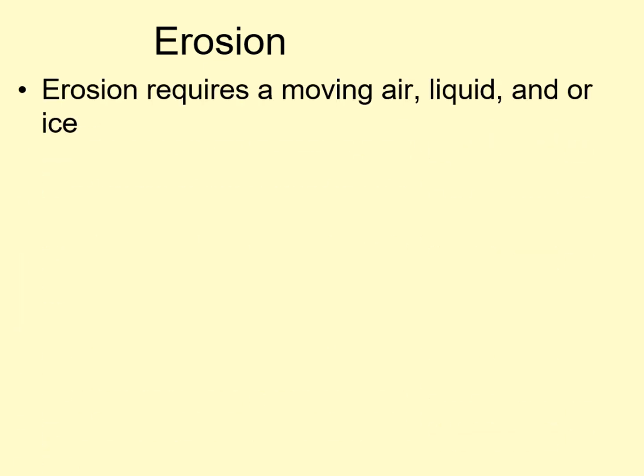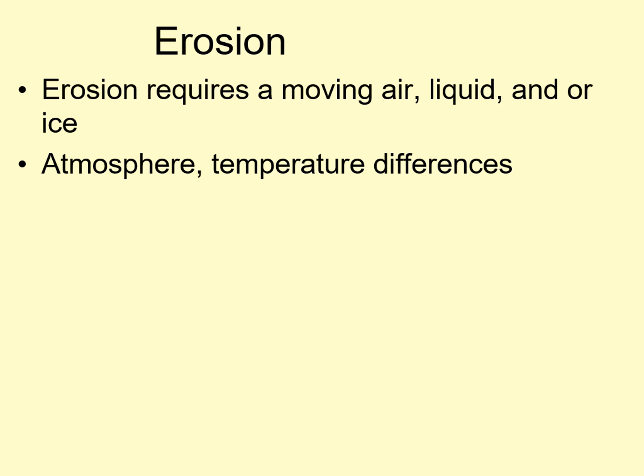Erosion is the rarest of the four major surface processes. It requires the presence of moving air, liquid, or ice across the surface, which requires an atmosphere and enough differences in temperature around the surface to make these move. For example, Venus has a substantial atmosphere, but the temperature is the same everywhere, so there's very little wind on its surface. In fact, there are only three worlds in which we've seen a lot of erosion: Earth has the most erosion and the most diverse types of erosion in the solar system. The other two are Mars and Saturn's moon Titan.